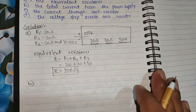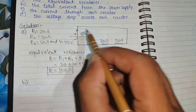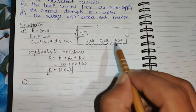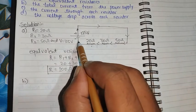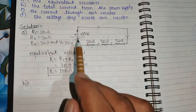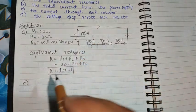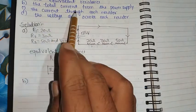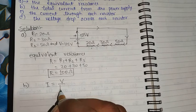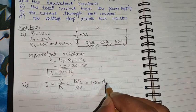Answer number two is the total current from the power supply. Current flows from plus to minus through the power supply, passing through the 50 ohm, 30 ohm, and 20 ohm resistors. Since the resistors are connected in series, the current will be the same throughout the path. Total current I = V / R = 125 / 100 = 1.25 ampere.